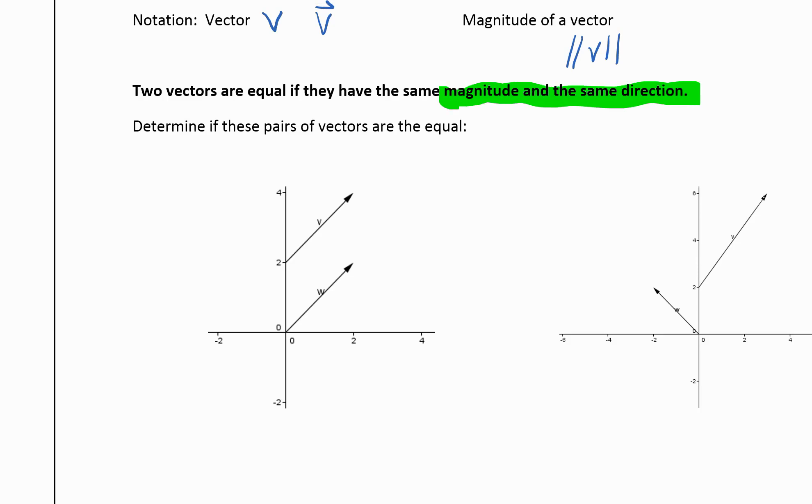So if we're looking at these two pairs of vectors to see if they're equal, these two are parallel, and if you measured them, they're in the same direction. Or they're the same length. So we'd say yes, these two are equal.